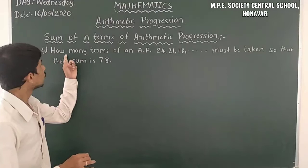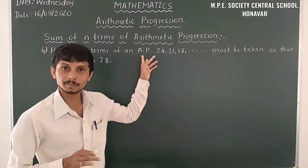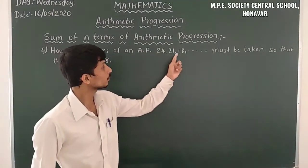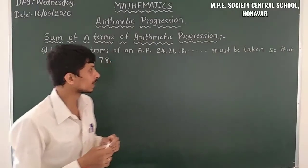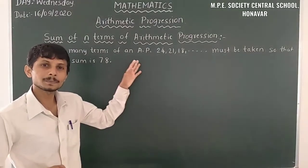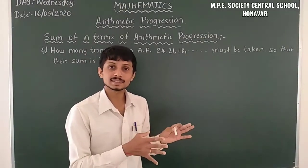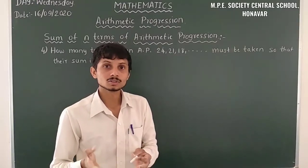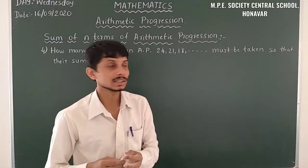The next problem tells us: how many terms of an AP — that is Arithmetic Progression — 24, 21, 18, ... must be taken so that the sum is 78? After some terms of this arithmetic progression, the sum equals 78. Here the value of N is unknown.